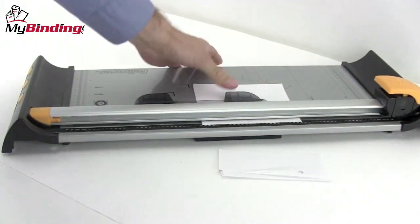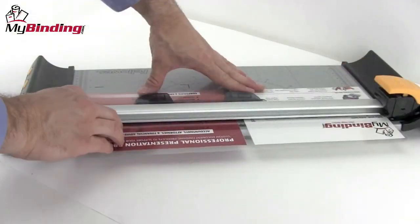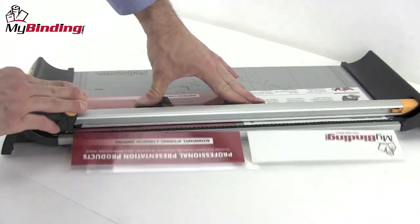As with all rotary trimmers, the blade goes both directions. With an 18-inch work surface, you have plenty of room for oversized projects, posters, and doubles.